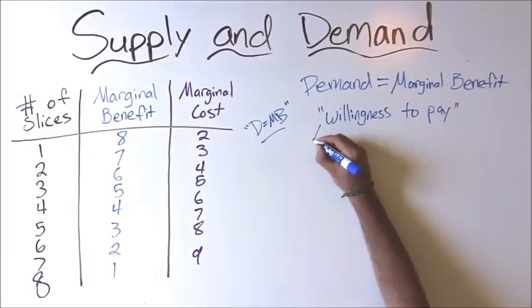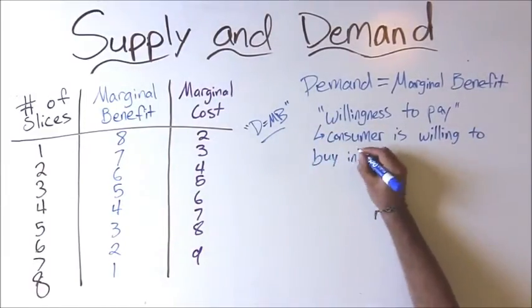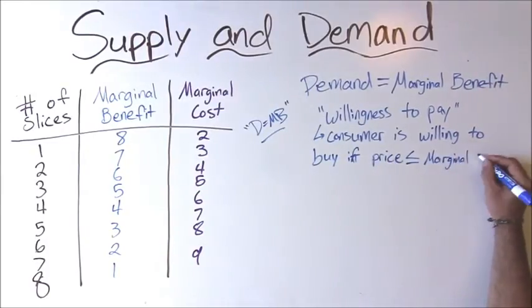A consumer is willing to buy if price is less than or equal to marginal benefit, because they get surplus benefit they don't have to pay for. We will discuss this in more detail in our next video. This is also known as willingness to pay.